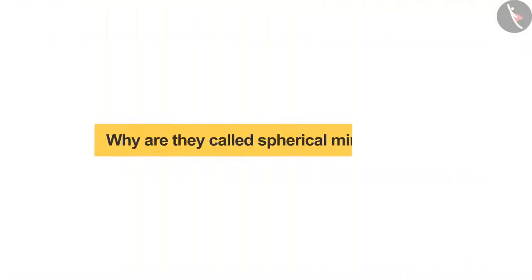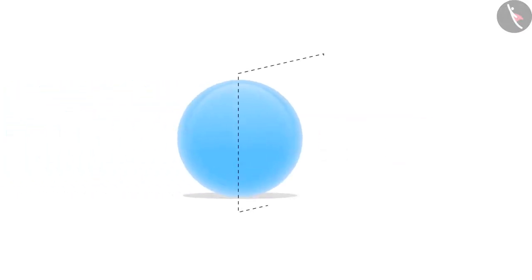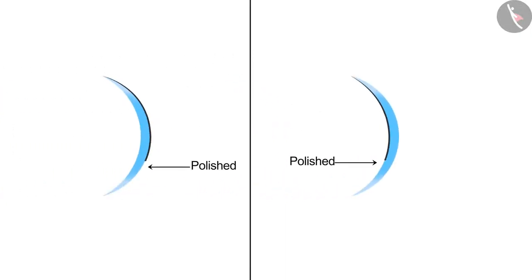Why are they called spherical mirrors? Let us understand why. Take a large sphere and cut it in such a way that we get spherical arc-like shapes. These shapes can be polished in either of the ways to make a mirror.